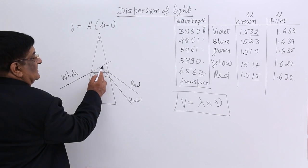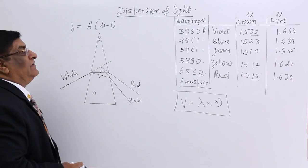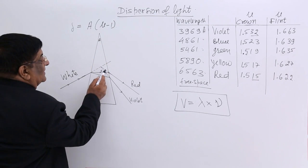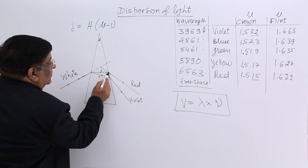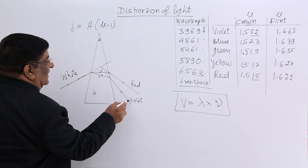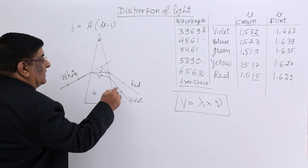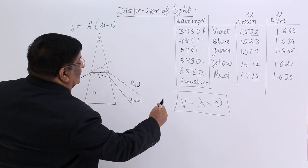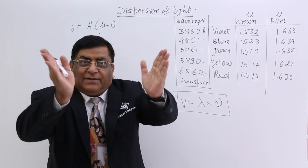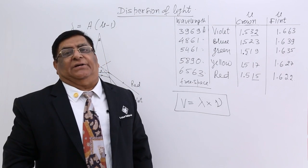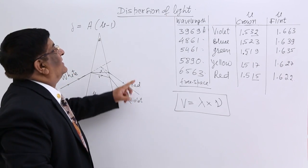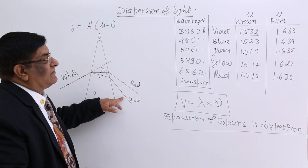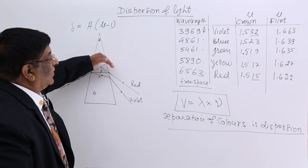Red is deviated, but violet is deviated more. Red after two bendings has adopted one direction, and violet after two bendings has adopted a different direction — their directions have separated. This action we call dispersion. This phenomenon of separating the colors is known as dispersion of light. Violet bends more and has got more deviation; red has got less deviation.